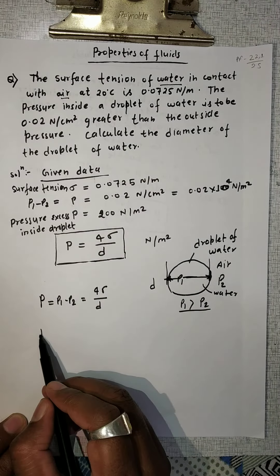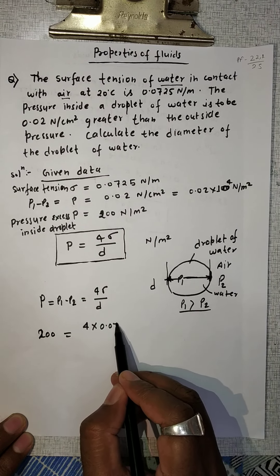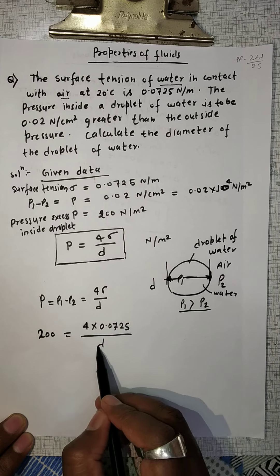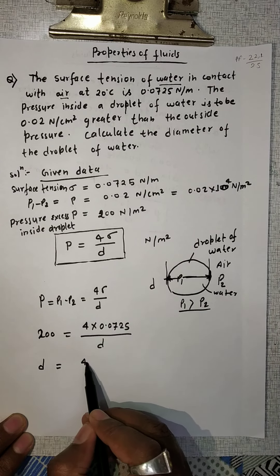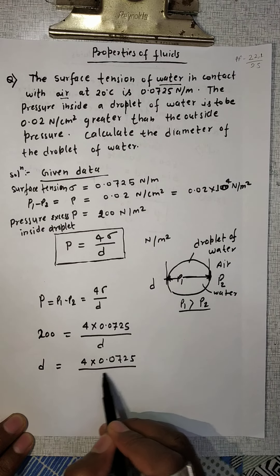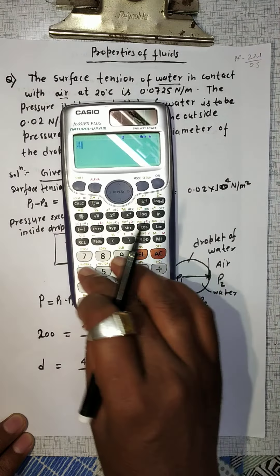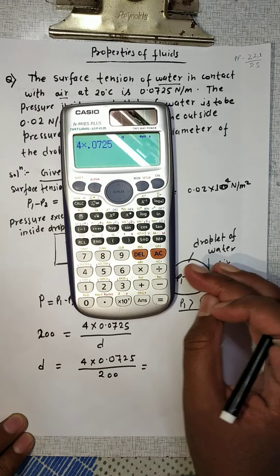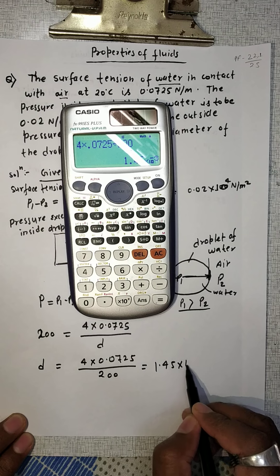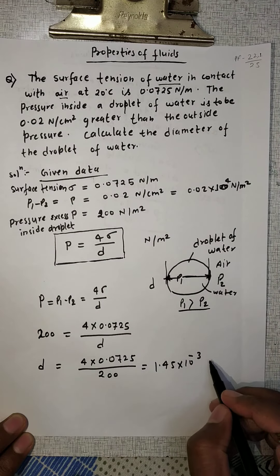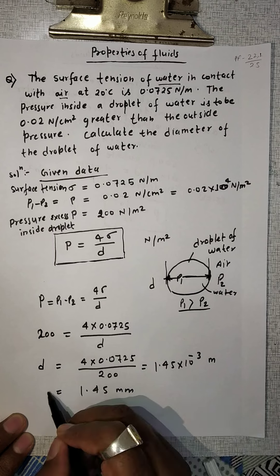Substituting the values: 200 Newton per meter square equals 4 into 0.0725 divided by D. Solving for D: D equals 4 into 0.0725 divided by 200, which equals 1.45 into 10 to the power minus 3 meters, or we can say the diameter is equal to 1.45 mm.